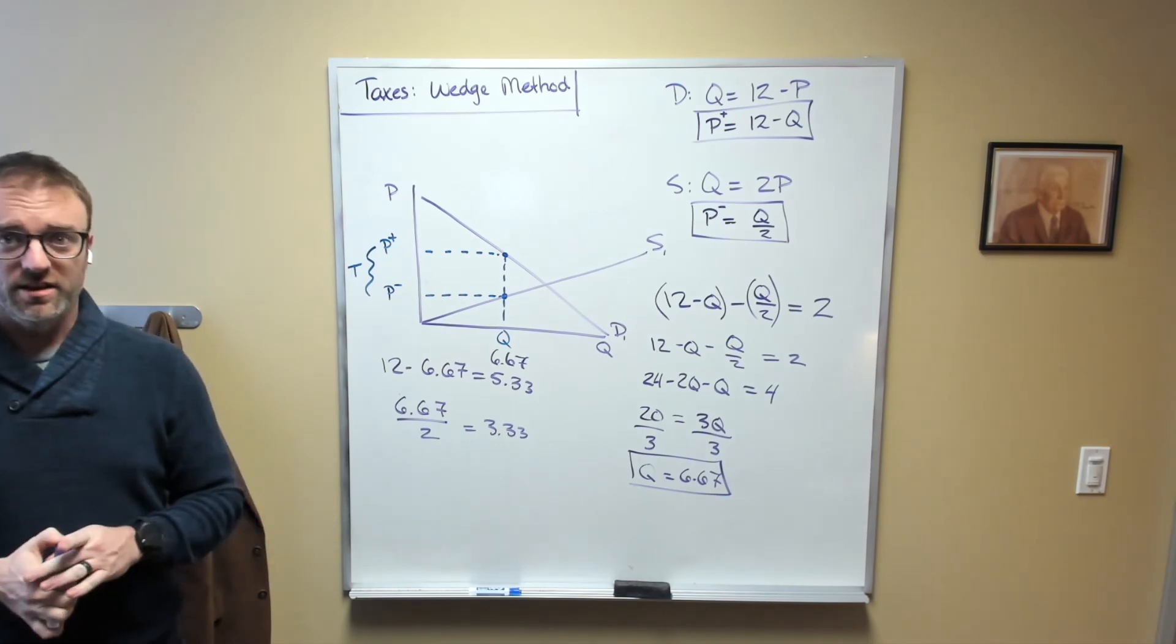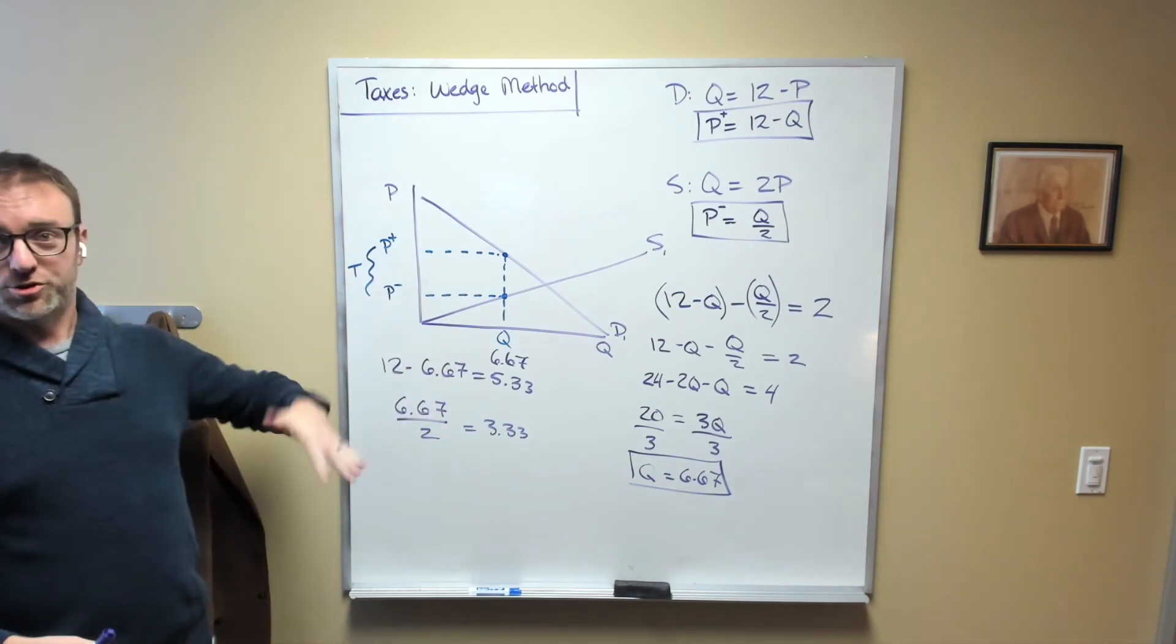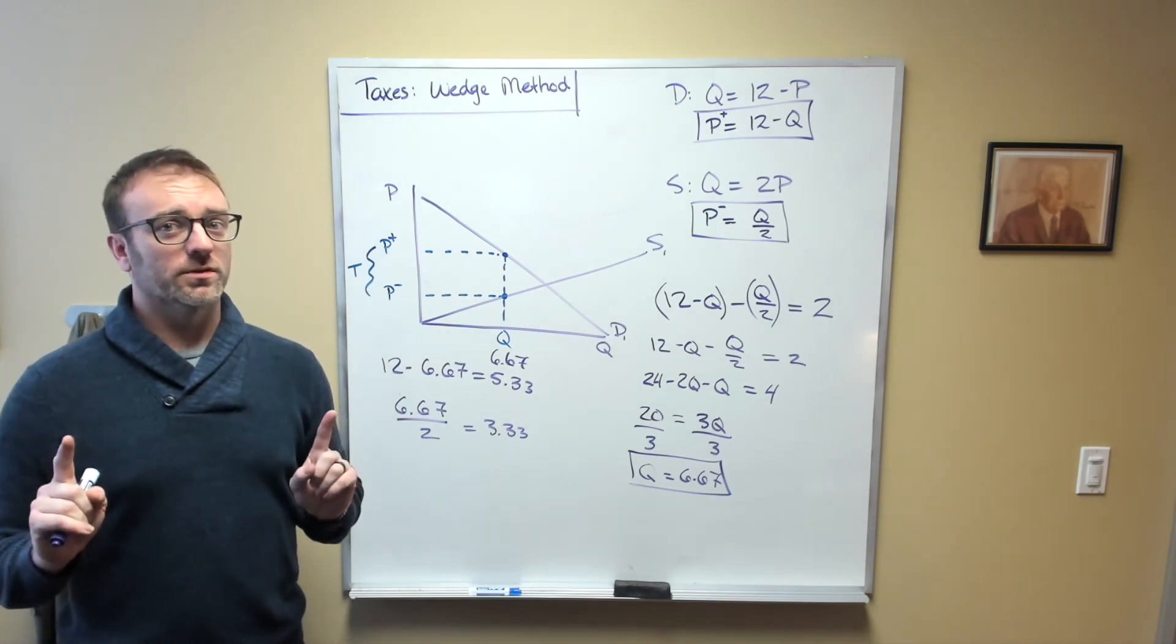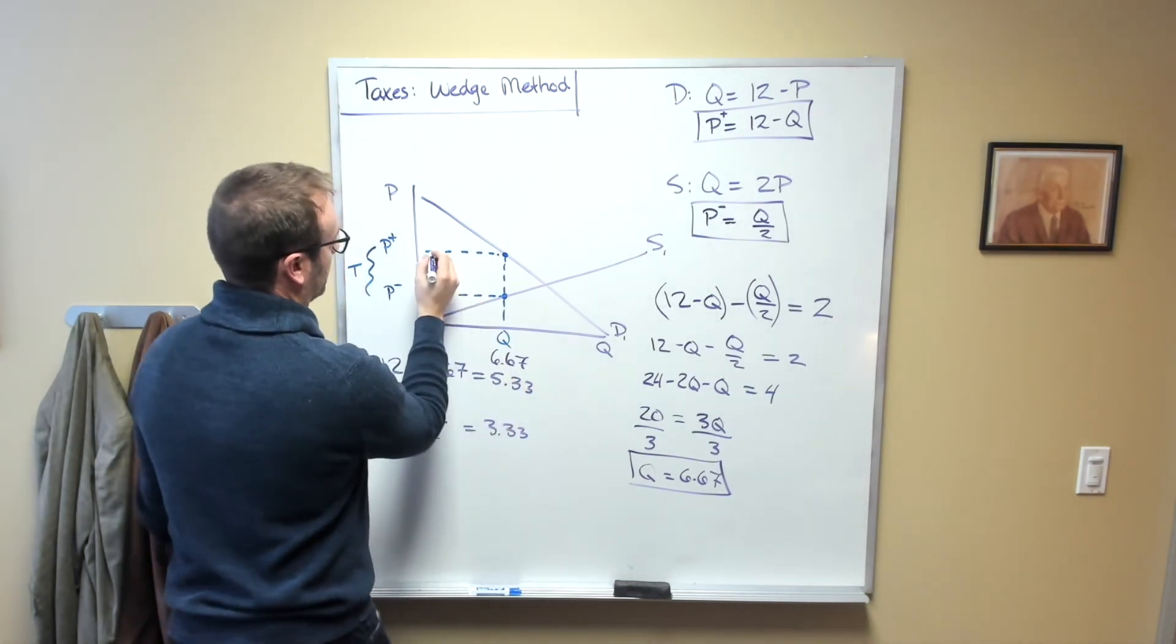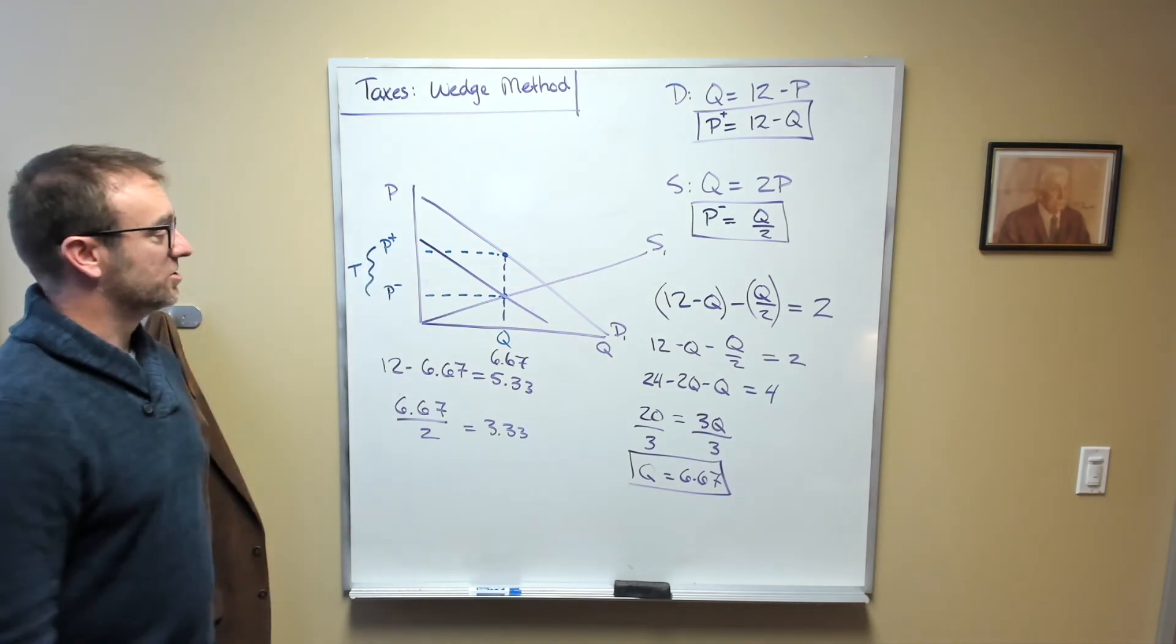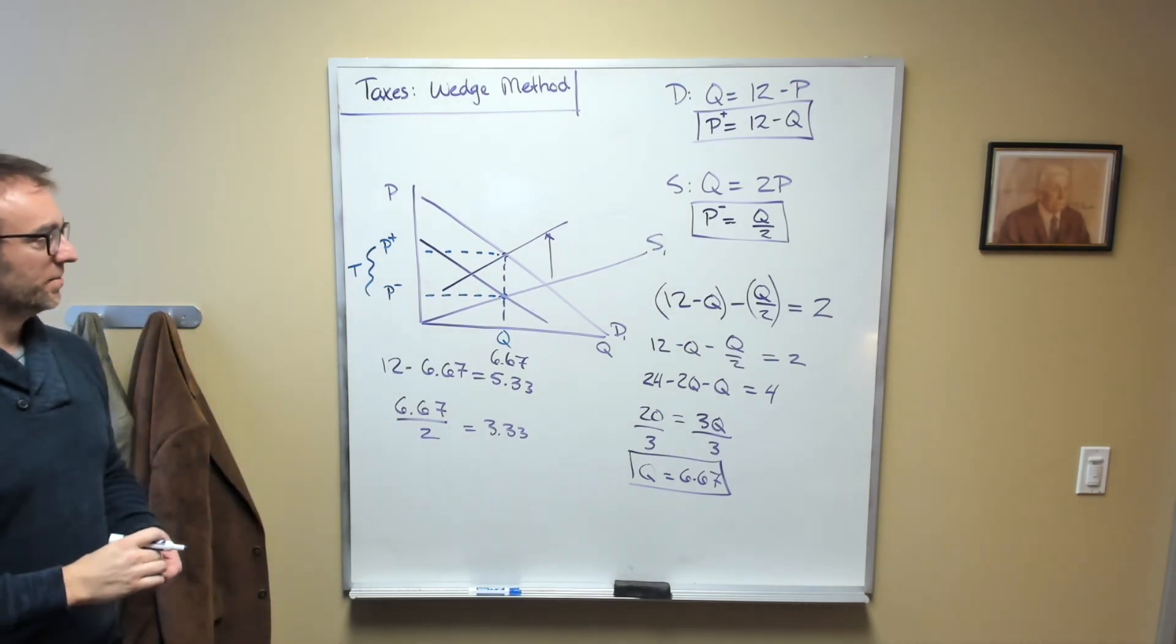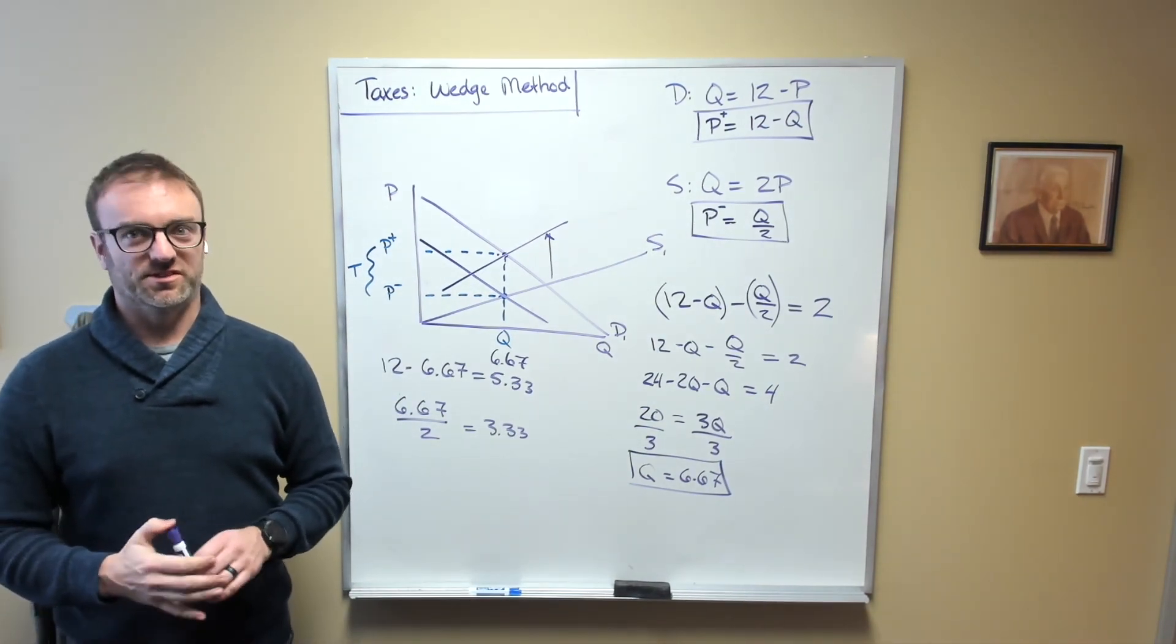And once you understand the incidence of the tax doesn't matter, this wedge method becomes very appealing and very quick. There's no more shifting curves around, finding multiple points, finding all kinds of weird stuff. You can just simply go straight to the answer and get the quantity right here. But this only works if you understand that the incidence of the tax, whether I place the tax on the consumers and therefore decrease their demand downward by 2, or whether I place the tax on the producers and therefore raise their supply by 2, either one doesn't matter. Once you understand that, the wedge method becomes much faster to solve for incidences of taxation.